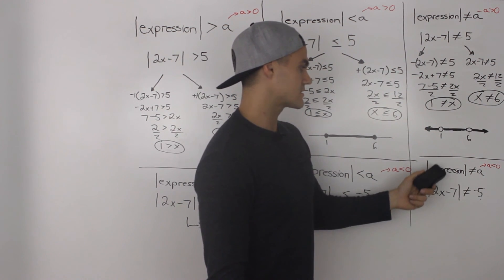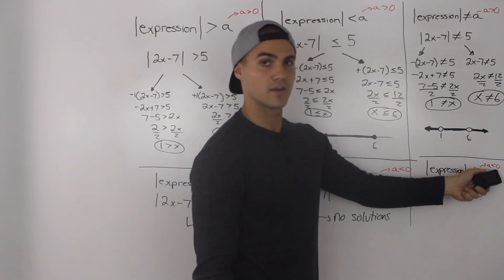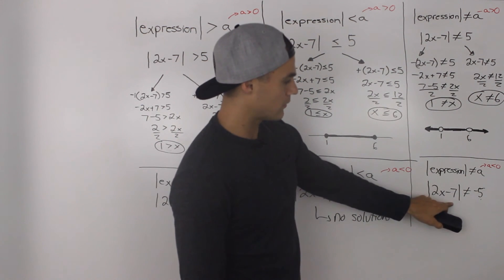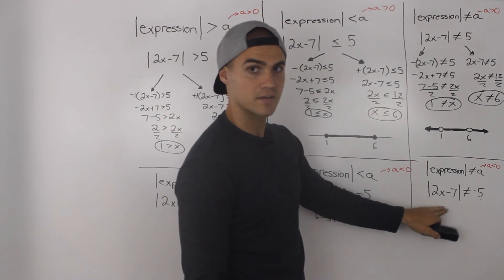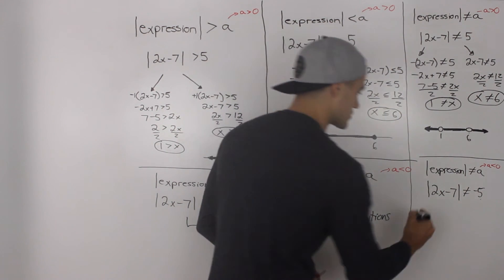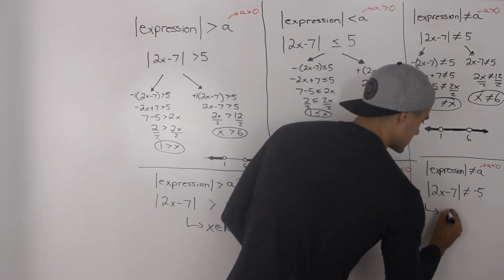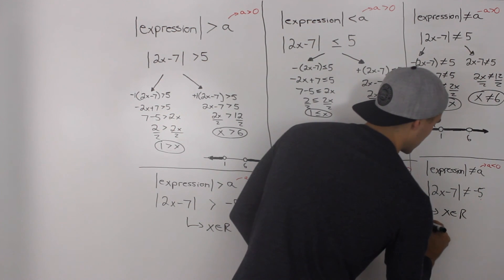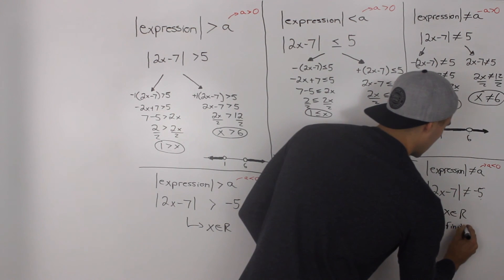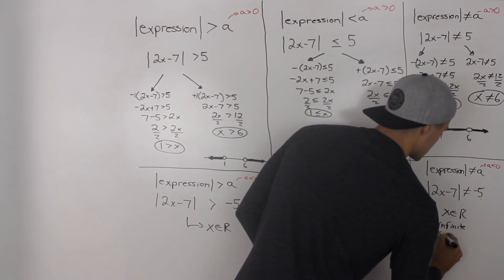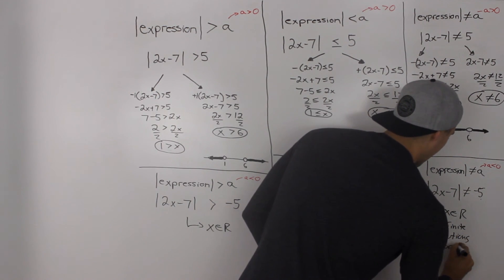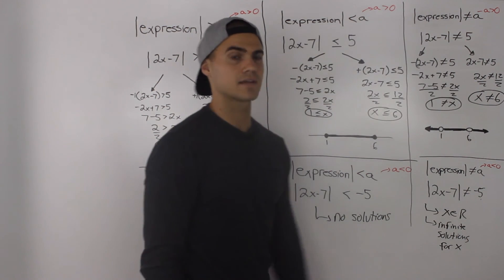Finally: if the absolute value of an expression cannot equal a negative number, the absolute value is always positive, so it will never equal a negative number regardless of x. The solution is all real numbers — an infinite amount of solutions, and x can take any value.